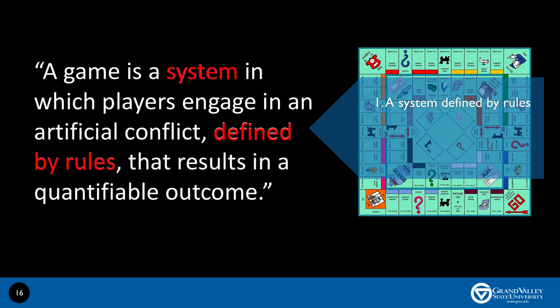In Monopoly, for example, there is a certain set of rules that we have to follow in order to play the game. All players must start from Go. Every time we pass Go, we collect $200. If we land on Go to Jail, we must go to jail, and so on. These set of rules create a universe that provides meaning to all our actions in the game.